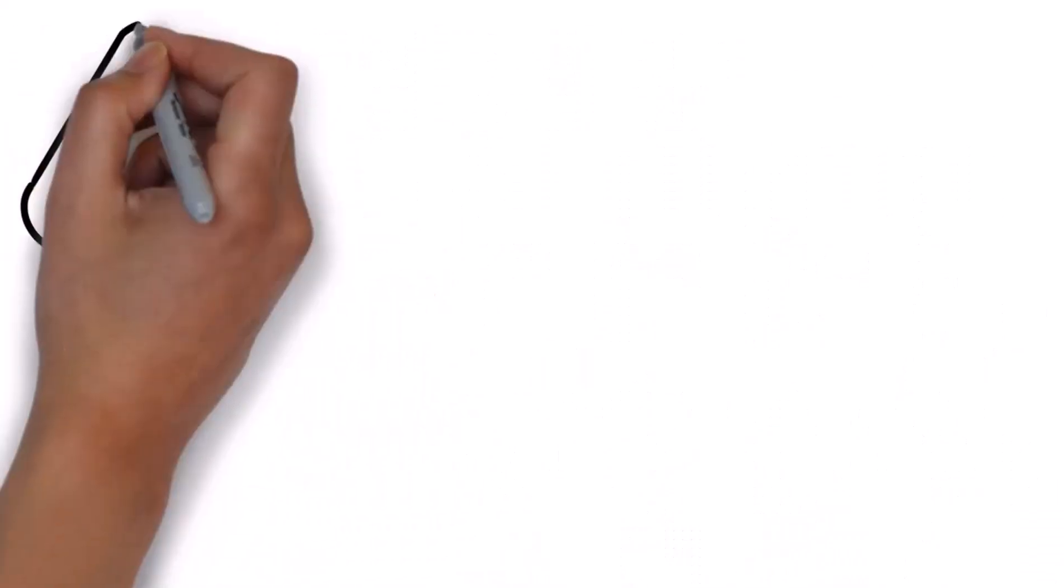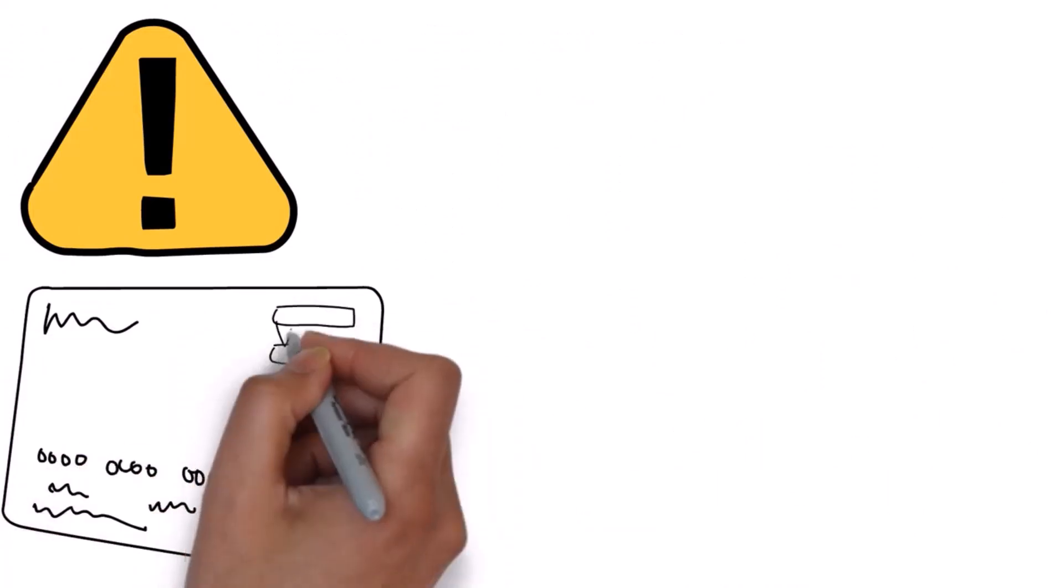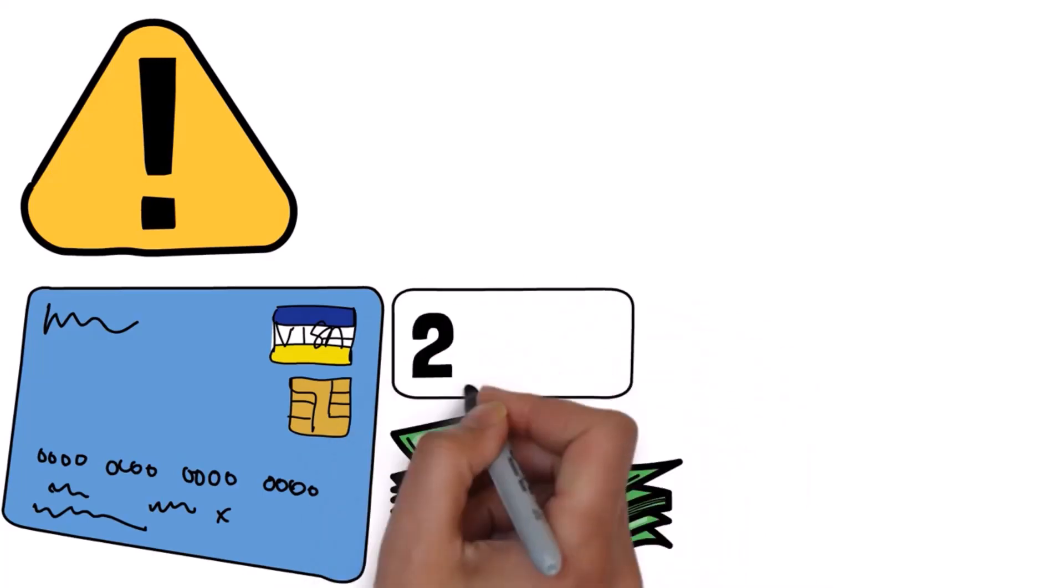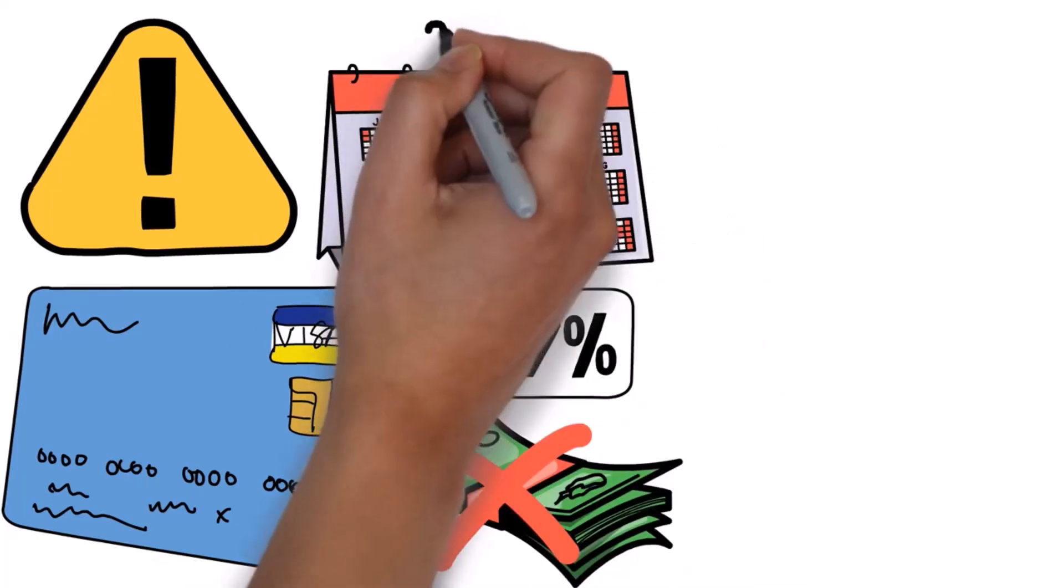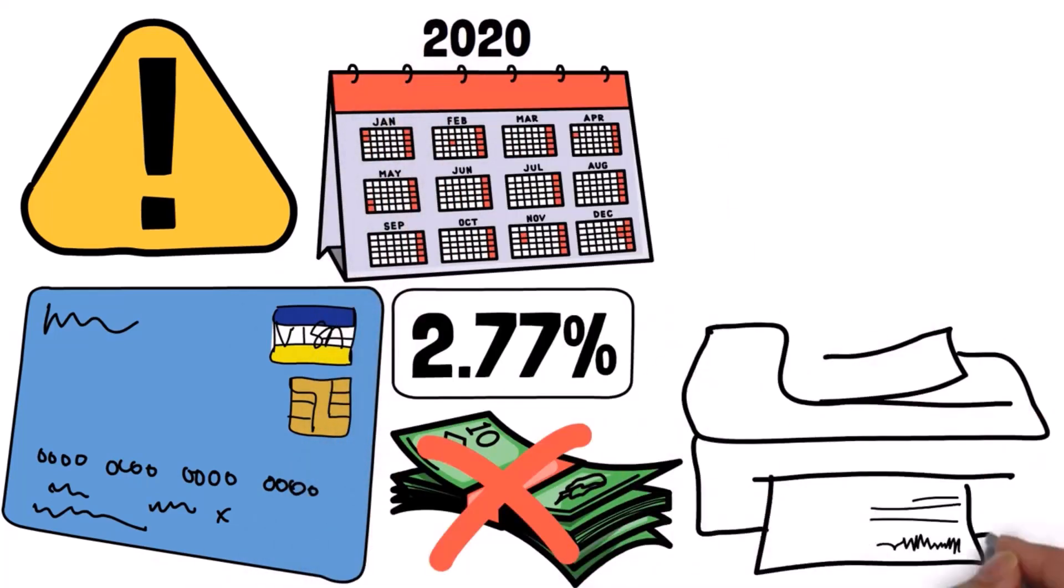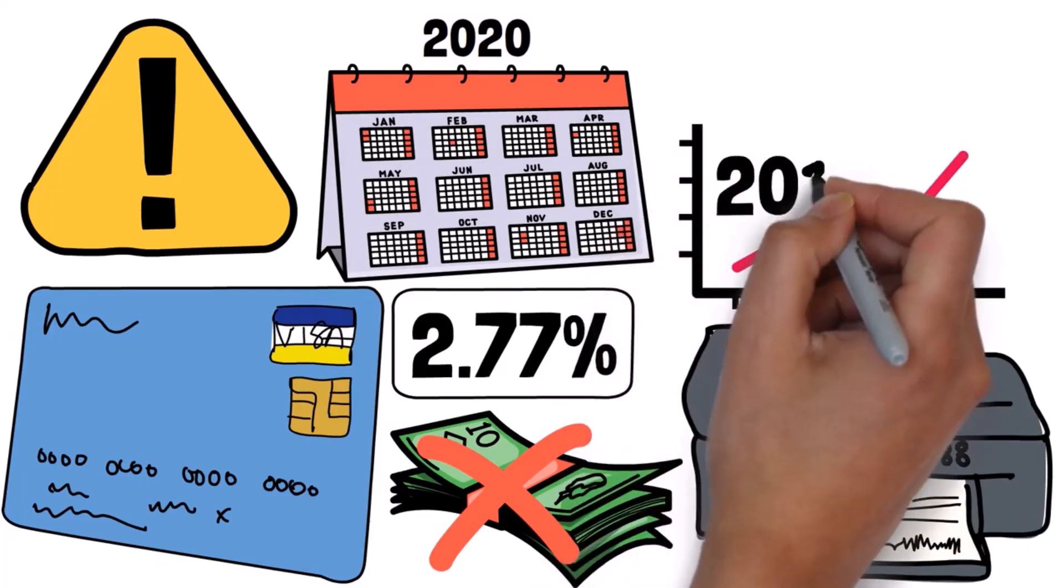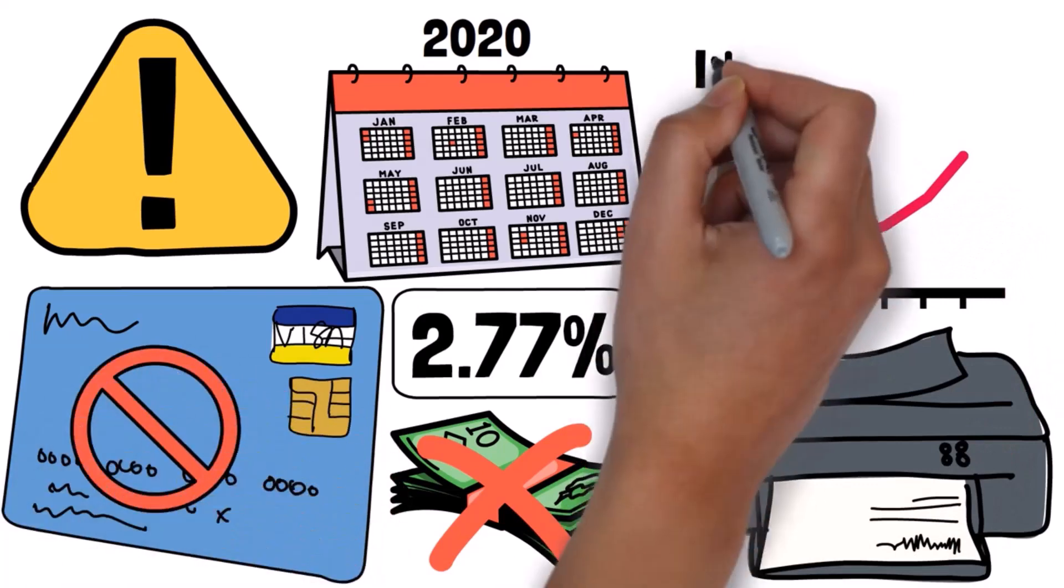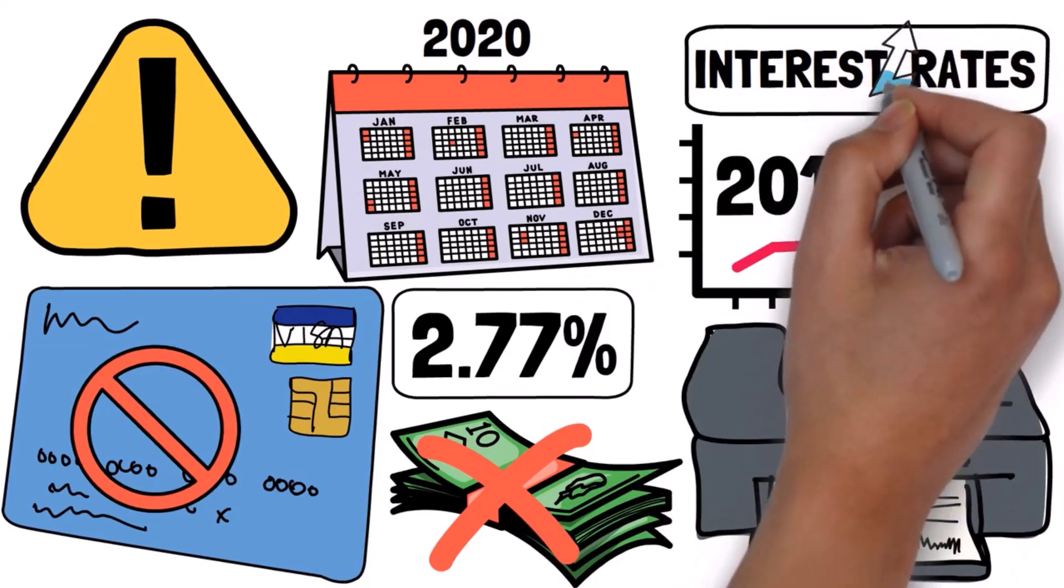But there's another problem with debt, specifically credit card debt. The number of people who are not paying their credit card bills on time is going up fast. It's now at 2.77%, which might not sound like much, but it's higher than the highest point in 2020 before the printing of more money started. To find a higher rate, you'd have to go all the way back to the third quarter of 2012. This shows that more people are having trouble paying off their credit card debt, especially now that interest rates on credit cards are very high.